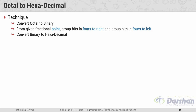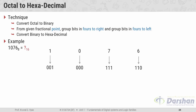Let us take one example: 1076 in octal. We will write 1076 with some spacing. The first step is to convert this octal number to binary. Using the octal to binary table, we write the binary equivalent of each octal digit: for 1 → 001, for 0 → 000, for 7 → 111, and for 6 → 110. In the second step, we start grouping four binary bits. There is no fractional point in this example, so starting from the right, we make groups of four.